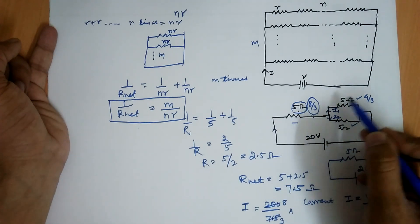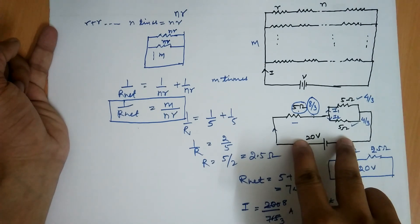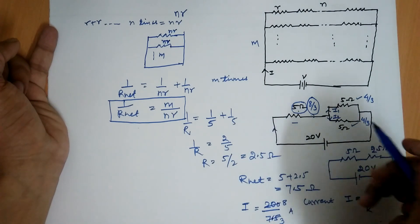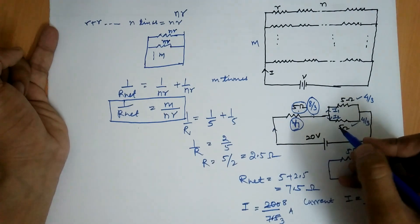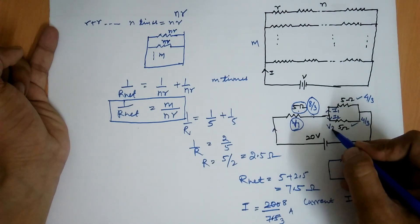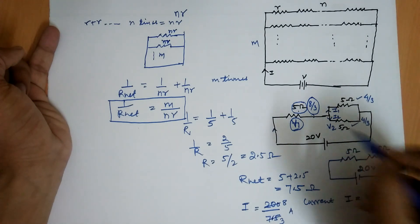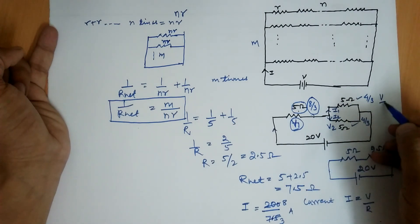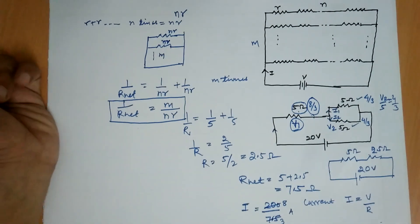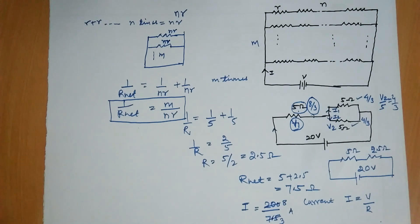Alternatively, since the 5 ohm resistance and the parallel combination are in series, the potential difference divides between them. You can find the potential difference across the parallel combination, then use V2 by R — where R is 5 ohm — to get 4 by 3 ampere. That is the other way to solve the numerical. If you have any problems, post in the comment section. Do like and share, subscribe to my channel and press the bell icon to get notified. Thank you.